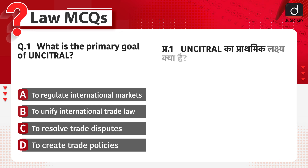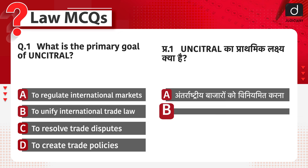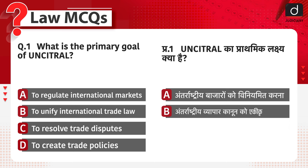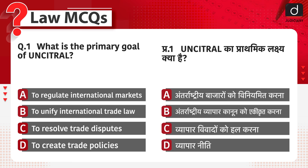UNCITRAL का प्राथमिक लक्ष्य क्या है? अंतर्राष्ट्रीय बाजारों को विनियमित करना, अंतर्राष्ट्रीय व्यापार कानून को एकीकृत करना, व्यापार विवादों को हल करना, या व्यापार नीतियां बनाना? The correct answer is option B, to unify international trade law.